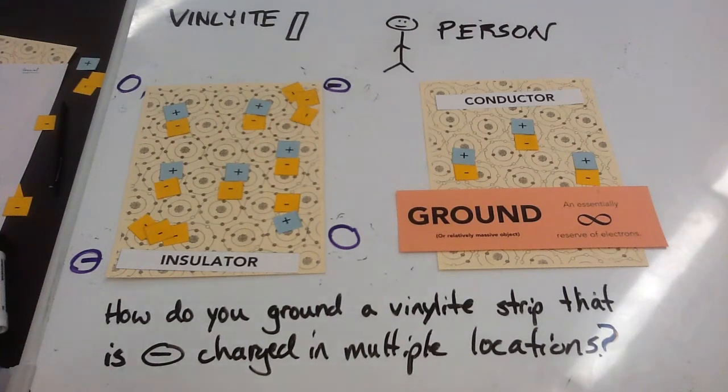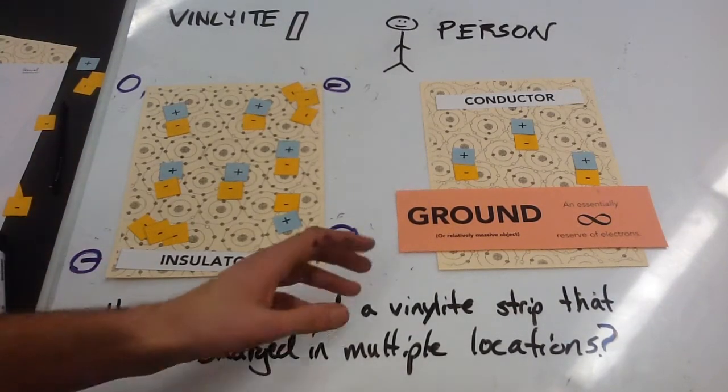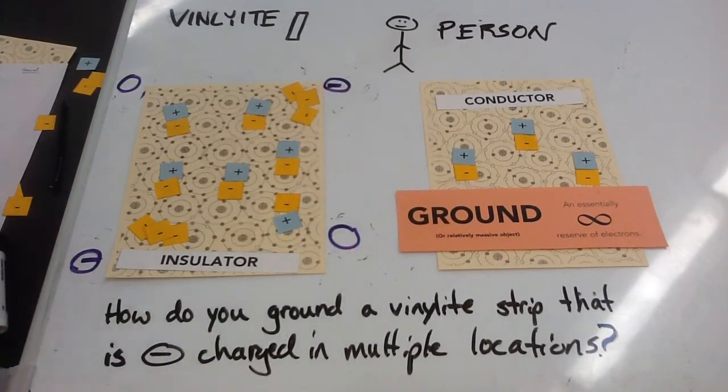All right, in this video we're going to be answering the question: how do you ground a vinyl aid strip that is negatively charged in multiple locations? Better yet, it's just how do you ground any type of insulator that has any type of charge in multiple locations.